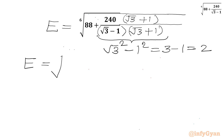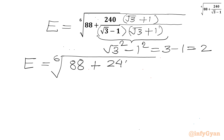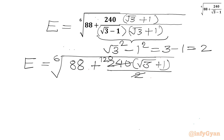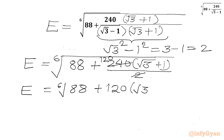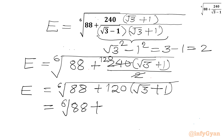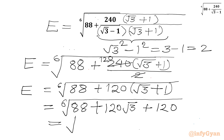We can write expression E equal to the sixth root of (88 + 240√3 + 1). These two terms will cancel, giving 120. So expression E becomes the sixth root of (88 + 120√3 + 1). Simplifying further we get 88 + 120√3 + 120.